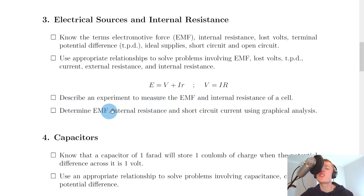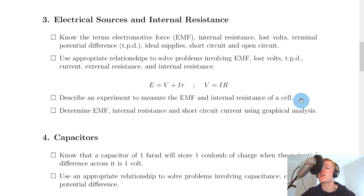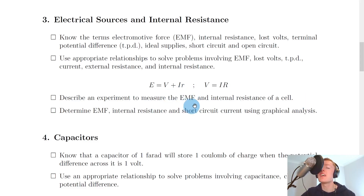You also need to be able to describe an experiment to measure the EMF and internal resistance of a cell. You connect a cell in series with a variable resistor and an ammeter, and have a voltmeter in parallel with the cell. You then change the resistance by adjusting the variable resistor, which changes the current. For a range of current values, you measure the terminal potential difference across the battery, draw a graph with TPD on the y-axis and current on the x-axis, getting a negatively sloping line. The y-axis intercept gives the EMF and the negative of the gradient gives the internal resistance.